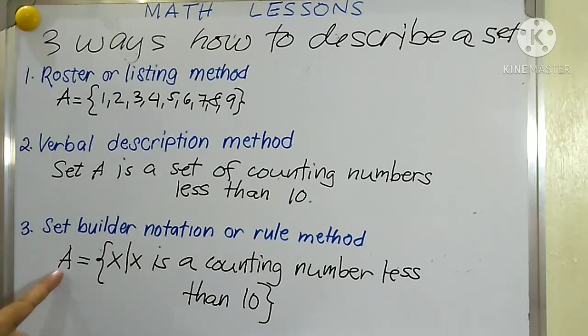That's it. Now let us read this. So we read this as set A is a set of all X's such that X is a counting number less than 10. Again, we are referring this example to our first example here. So this is read as...